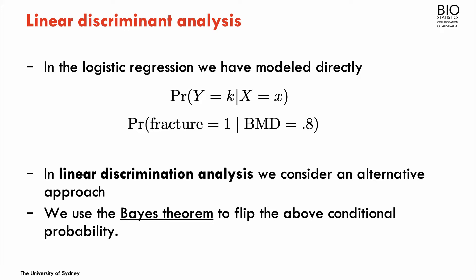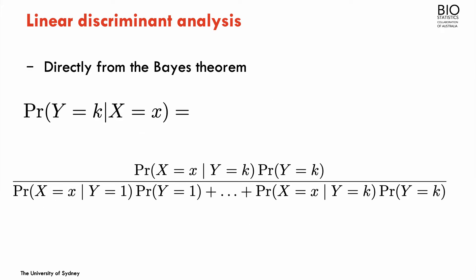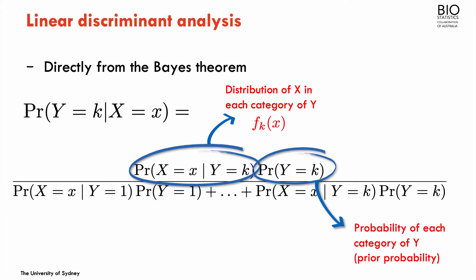In linear discriminant analysis, we're going to consider an alternative approach to evaluate this probability. We're going to use Bayes' theorem to flip the conditional probability — the probability of y given x. From Bayes' theorem, the probability of y given x can be written as the probability of x given y times the probability of y, divided by the probability of x. Since the covariates x are continuous, this probability is actually the density f of x for different categories k, and the other quantity in the numerator is the marginal probability of each category of the outcome.